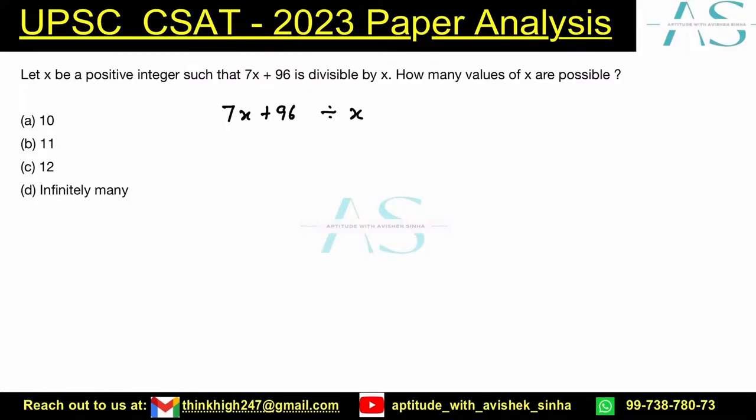We only need to find the number of factors of 96. How can I find out the number of factors for 96? Let's break down 96 into its prime factorization.